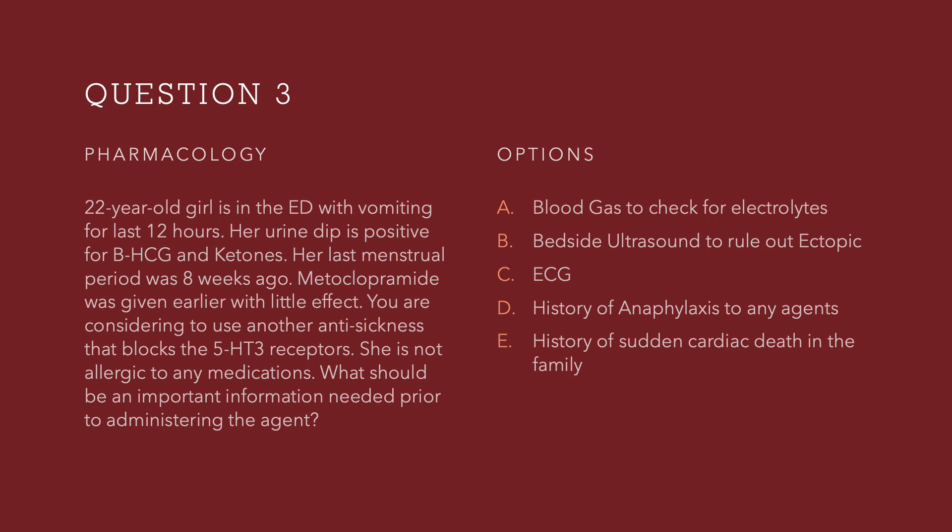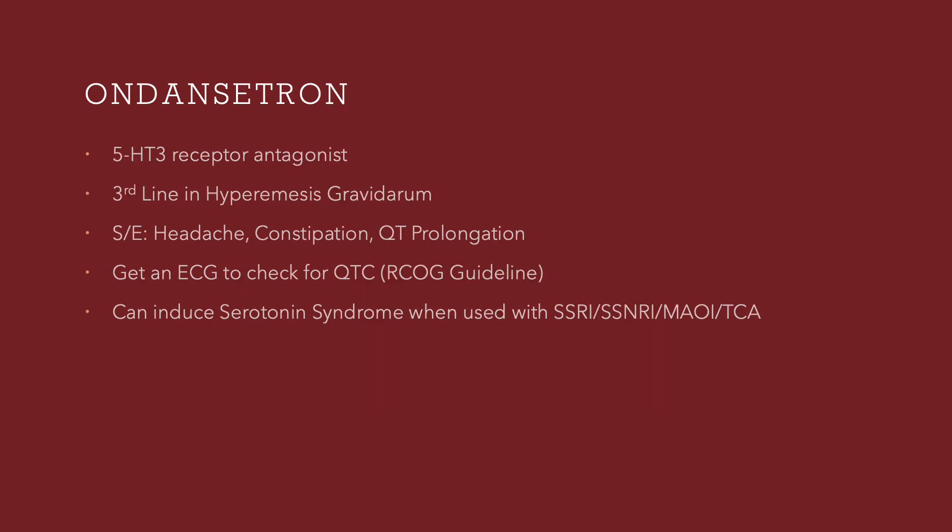So you want to prescribe a 5-HT3 receptor blocker, which is ondansetron. Ondansetron is a 5-HT3 receptor antagonist and is third line in hyperemesis gravidarum as per the RCOG guidelines. The side effects are headache, constipation, and it can give rise to QT prolongation. So you need to get an ECG to check for QTc prolongation. This is per the Royal College of OBGY guidelines. Remember, ondansetron can also induce serotonin syndrome when used with SSRIs, SNRIs, MAO inhibitors, or TCAs. These are the important features to know about ondansetron.